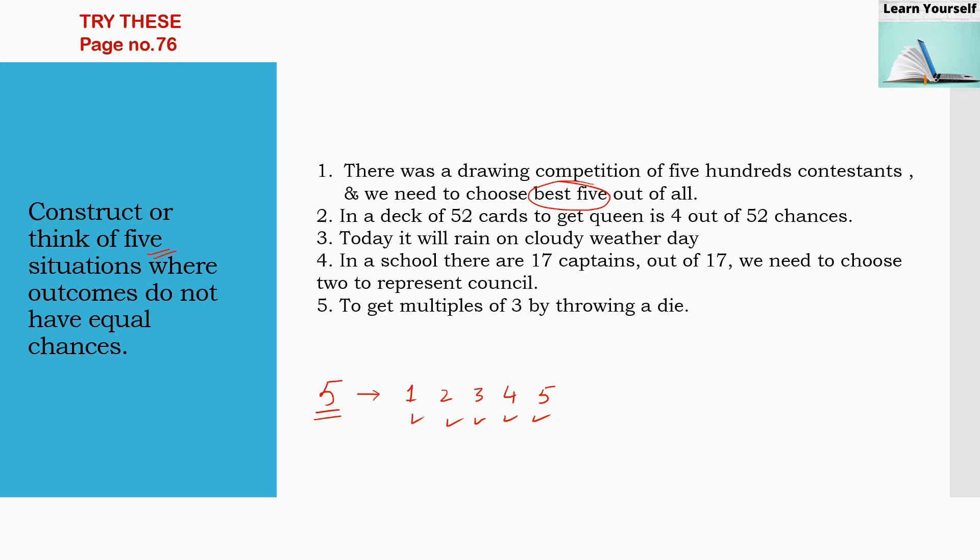Second situation is in a deck of 52 cards to get a queen is 4 out of 52 chances, because out of 52 cards there are 4 queens. Chances to get a queen is 4 out of 52 chances. So it's not equal chance.